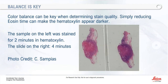Color balance is really important. This slide shows the difference between two minutes of hematoxylin on the left versus four minutes on the right. You can also play with eosin time — increasing eosin time makes everything a bit darker. The two colors play off each other: a really bright pink will naturally make the blue of your nuclei seem lighter, and conversely, very dark nuclei can make your eosin appear lighter. It's all about balance.